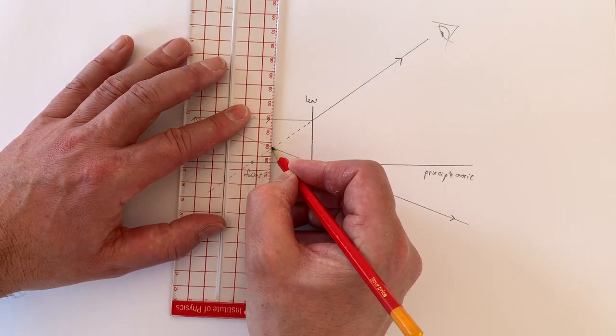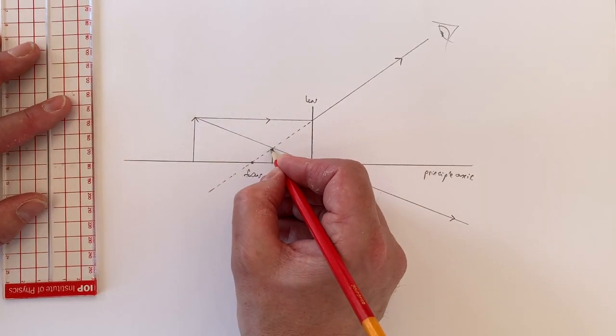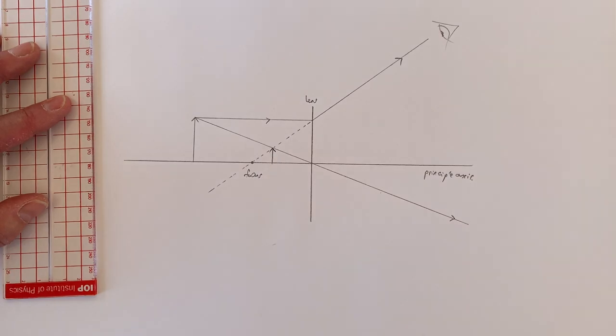And so from the point of view of the observer, the light appears to come from this point and hence the observer will see an image of the object at that point.